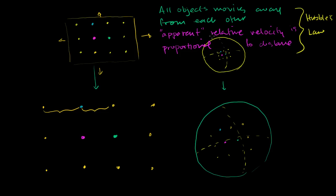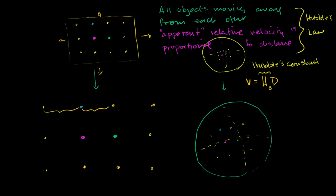Hubble came up with this by just observing that the further out he looks, the more red-shifted objects are — not only were they moving faster and faster away from Earth, but they seemed to be moving faster and faster away from each other. From any point, say from the Earth, the velocity that something appears to be moving is going to be some constant times the distance that it is away from the observer. This H here is called Hubble's constant, written as H₀ — the subscript zero shows that this is Hubble's constant right now. When we talk about distance, we're talking about the proper distance right now.